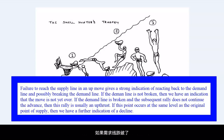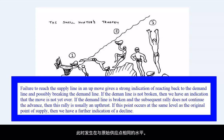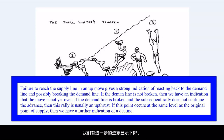If the demand line is broken and the subsequent rally does not continue the advance, then this rally is usually an up thrust. If this point occurs at the same level as the original point of supply, then we have a further indication of a decline.